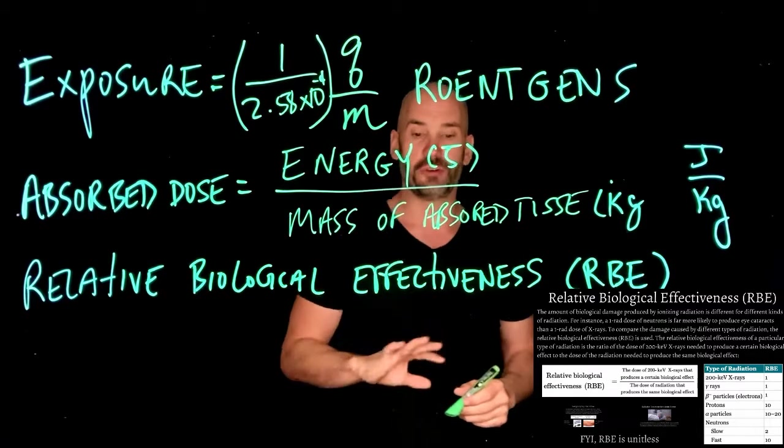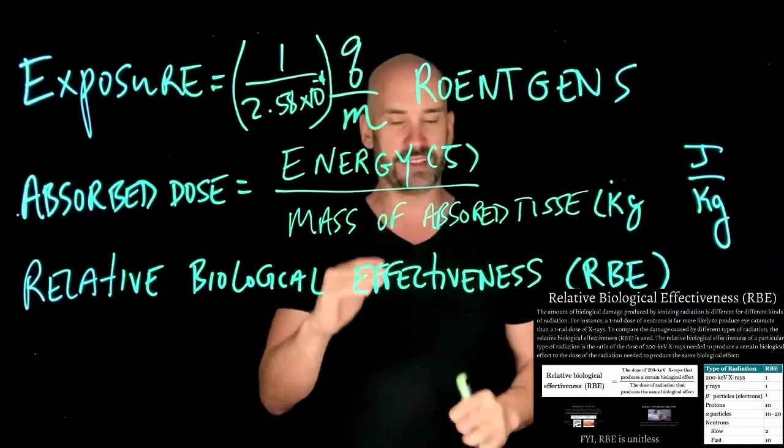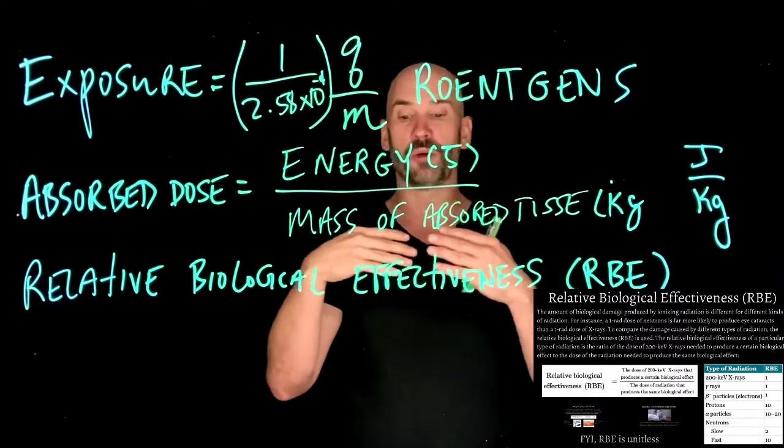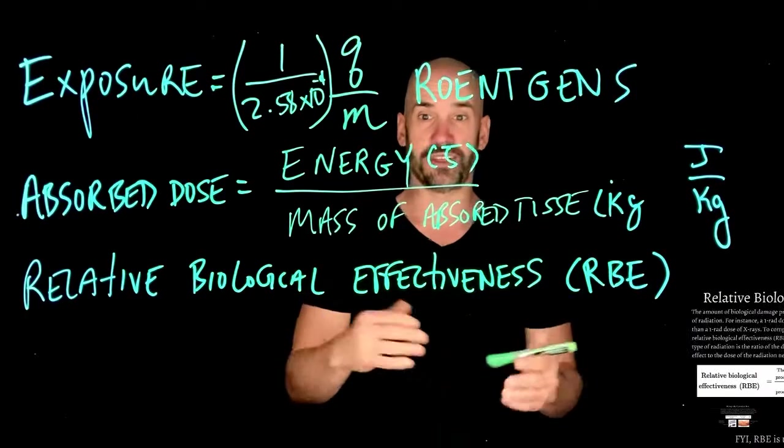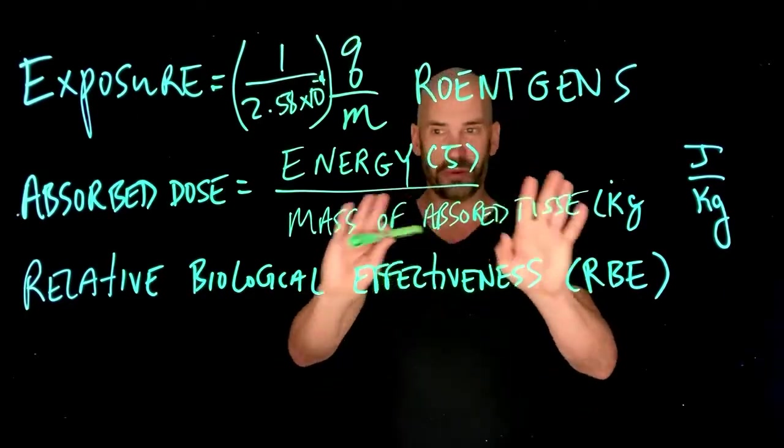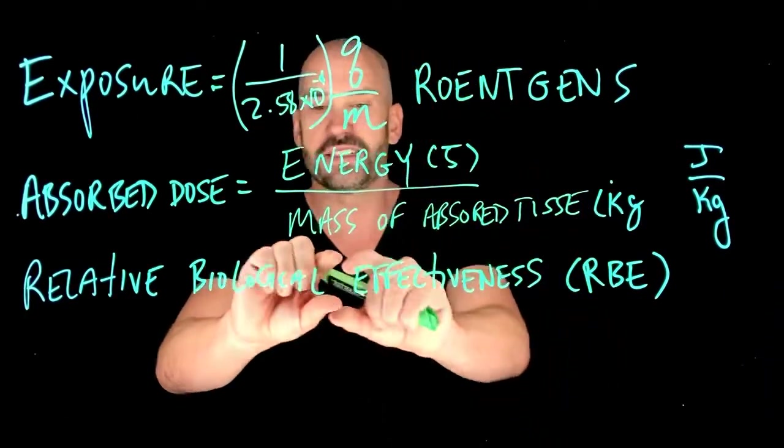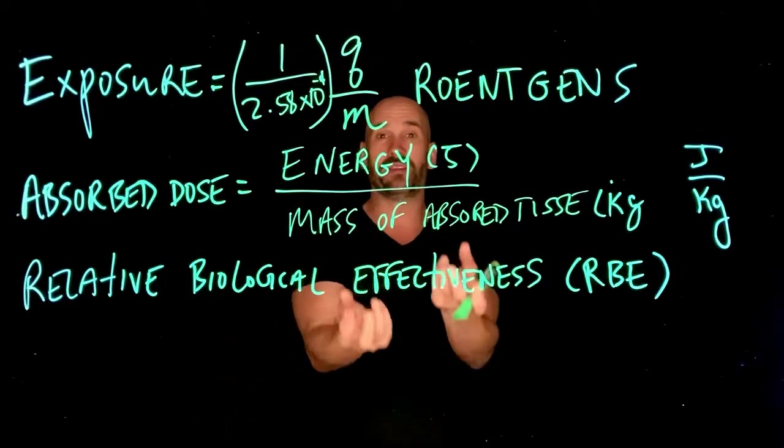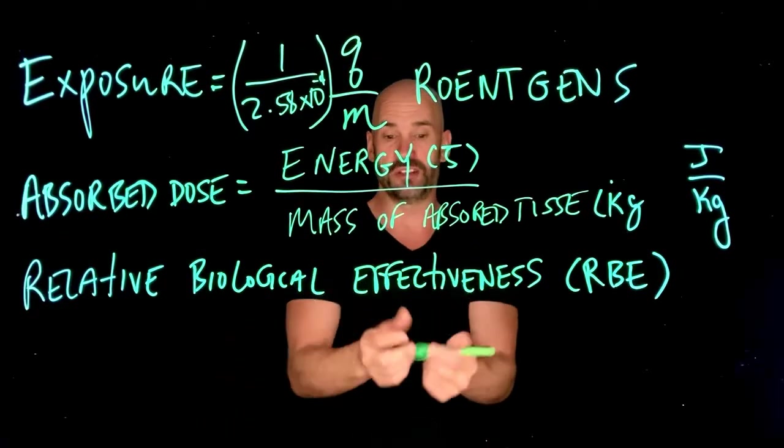Now, in any problem that I give you, I'm not actually going to make you calculate that ratio of the dose of 200 kilo electron volts. I will give you the relative biological effectiveness. Just know that this is a way of basically comparing apples and oranges. How do you compare the biological effects of different kinds of radiation?